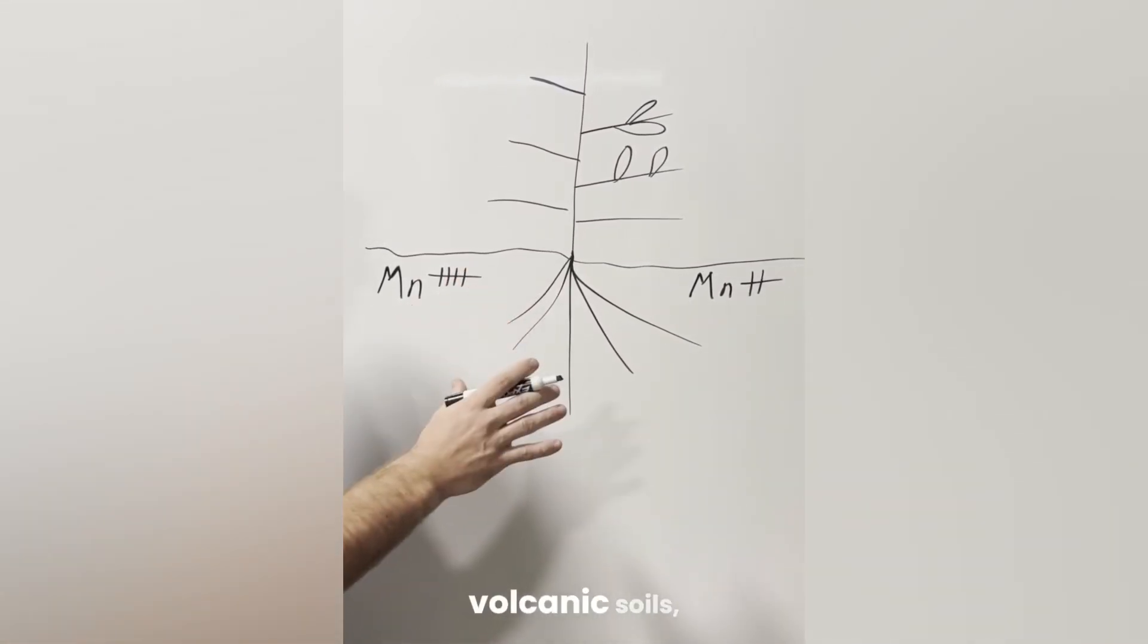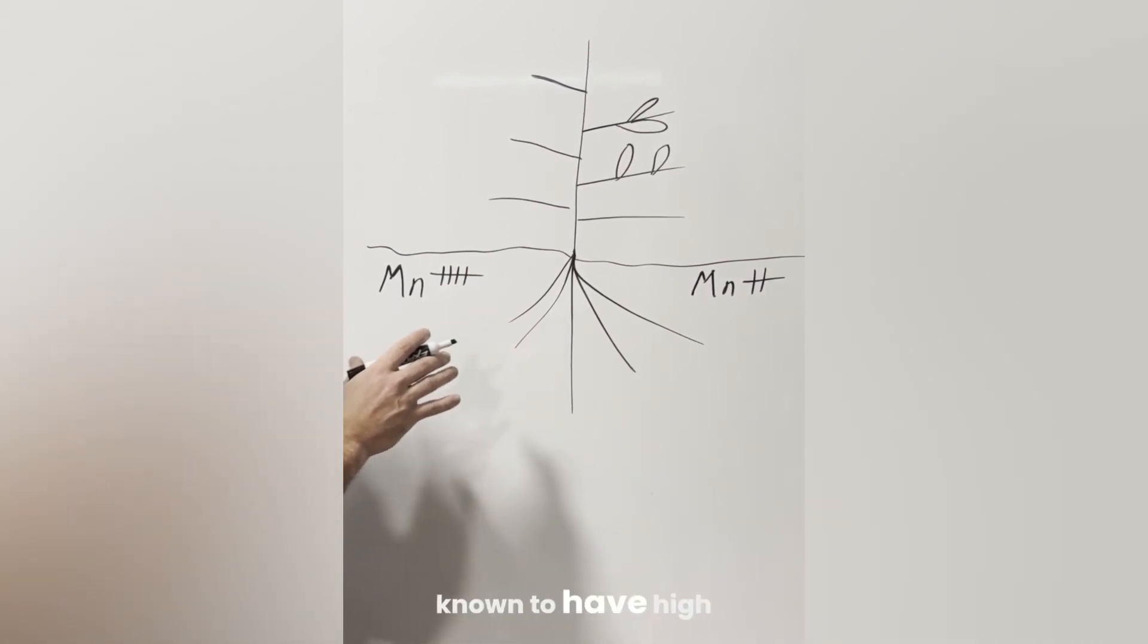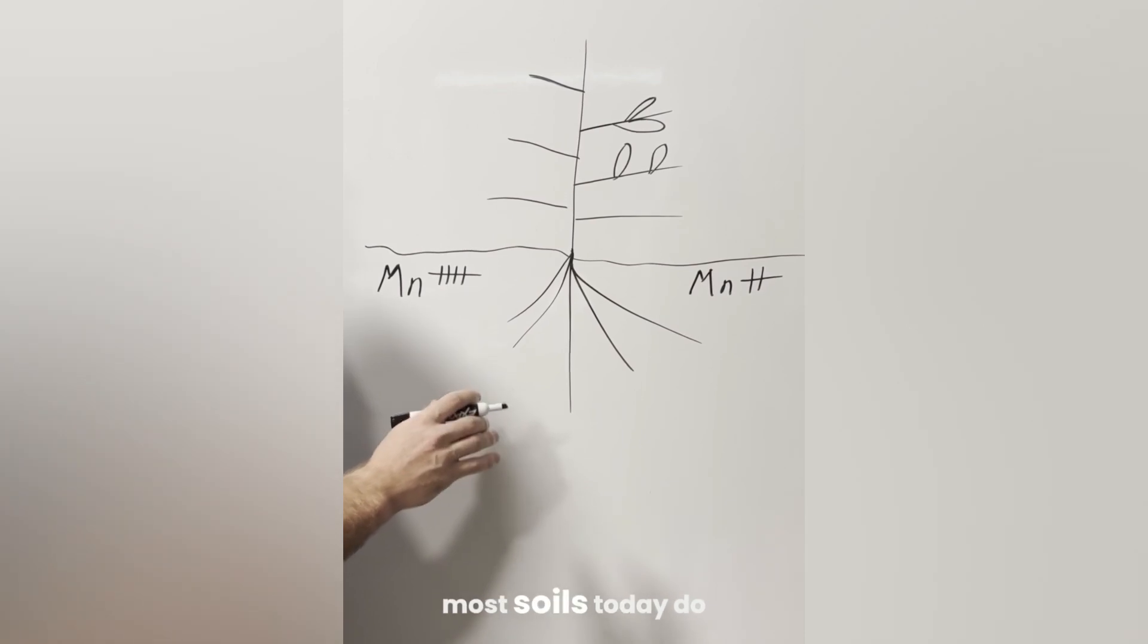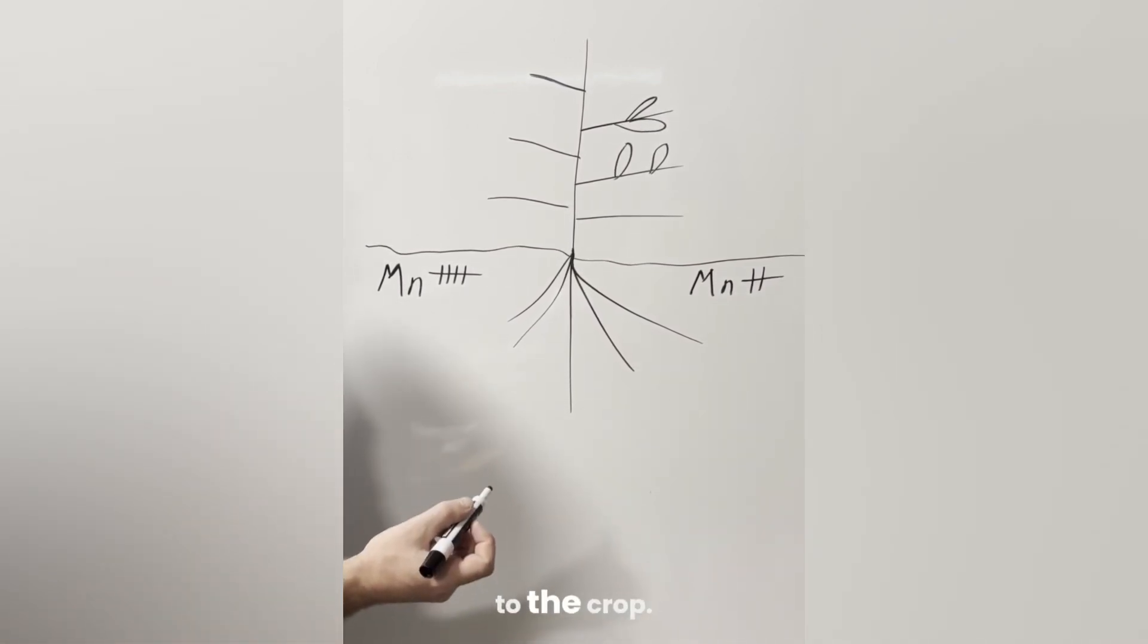unless you have volcanic soils, igneous soils that are known to have high manganese levels, most soils today do not deliver enough manganese to the crop.